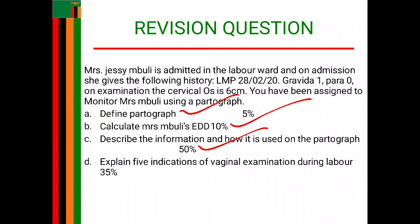Then the last thing you talk about under fetal well-being is moulding. On moulding, you will plot on the partograph if the fetal skull bones are opposing each other, and you will indicate with a 2+ if the fetal skull bones are overlapping, and with a 3+ if the skull bones are overlapping and not reducible. So that is how you explain the information and how it is used on the partograph — you explain each parameter and exactly how it is used.